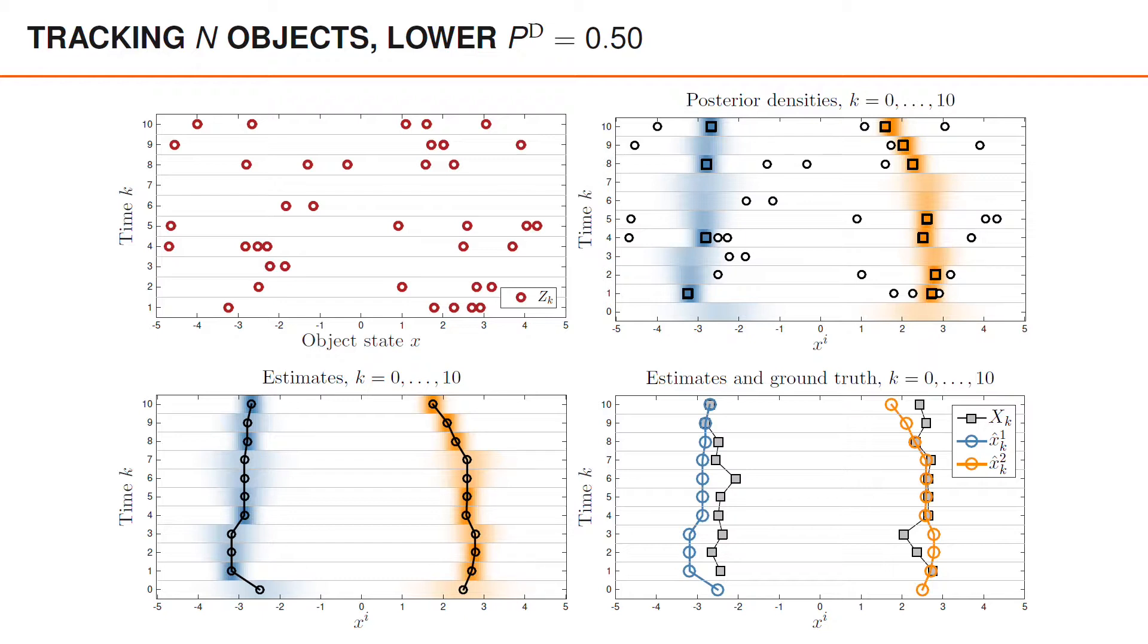Now we have more missed detections. Some interesting differences can be seen. Because we have several time steps in a row where detection is not associated, the visualization of the marginal posterior densities are more smeared out. That is because the covariances are much larger when we predict and then do not have any associated detection to update with. Due to the fact that we have more misdetections, the estimates can be seen to be worse than previously, which is most evident for the first object, colored in blue. From time 1 to time 7, this object state is estimated to be smaller than what the ground truth is.